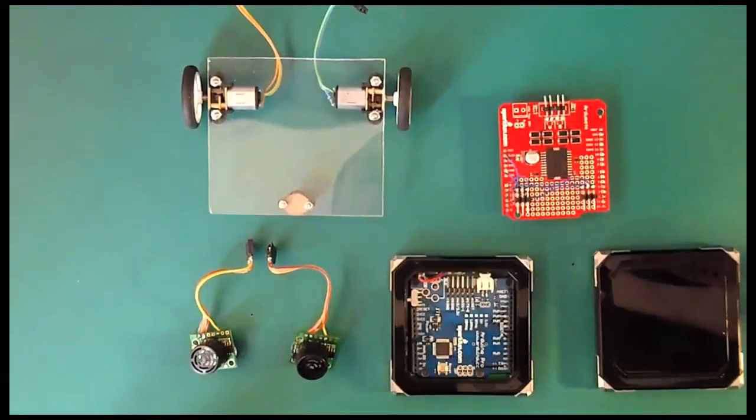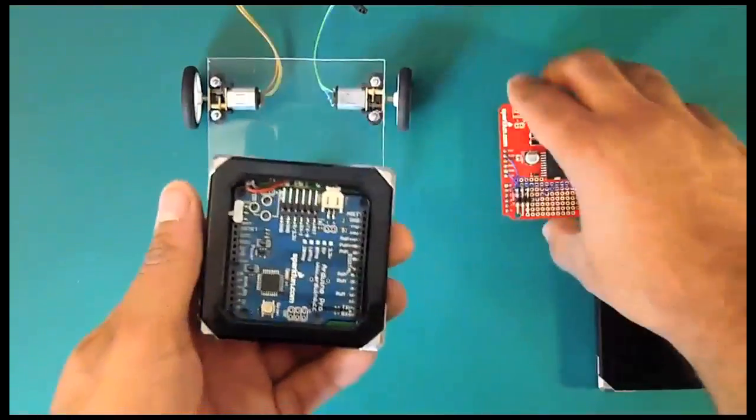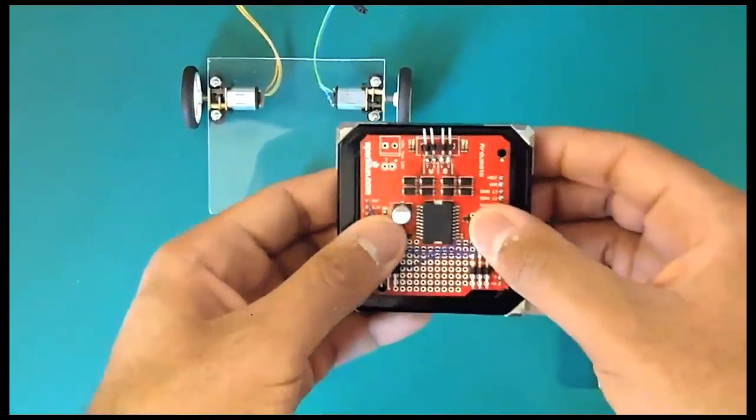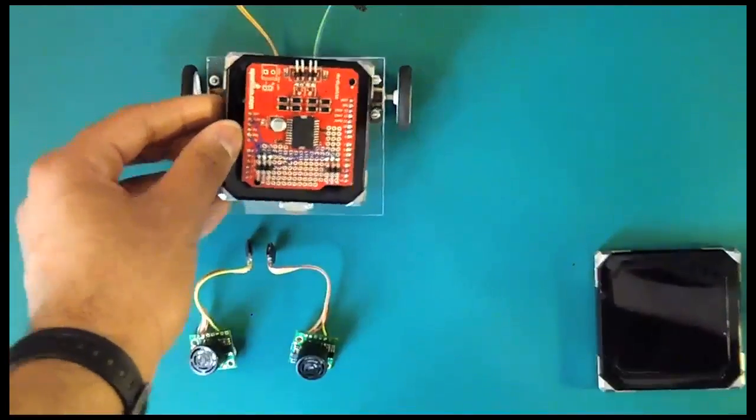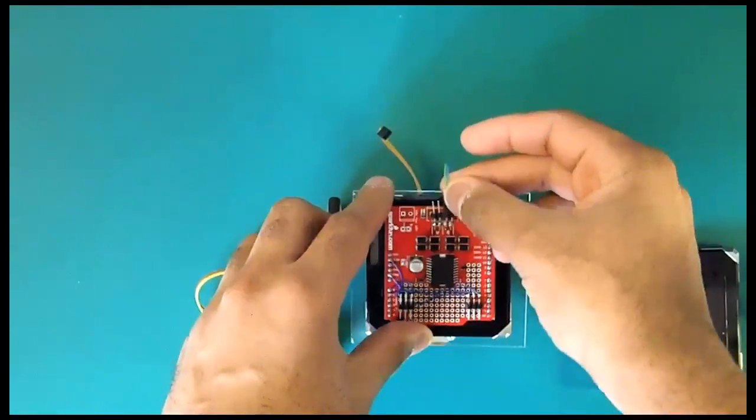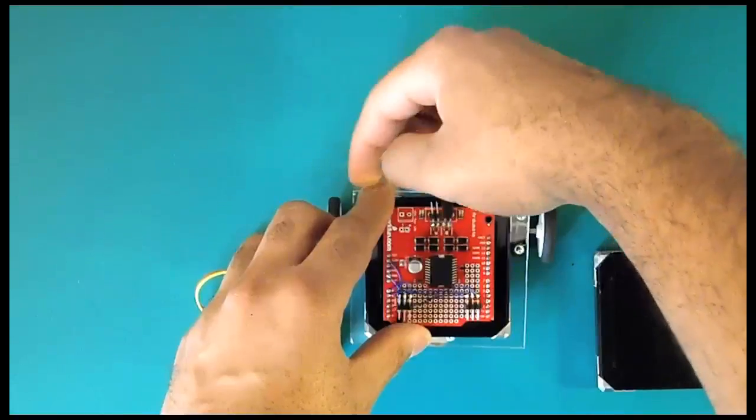To assemble the robot we start by plugging in the motor driver shield into the Arduino square like so. Then we can place the Arduino square on top of the wheel assembly, plug in the two motors, left and right,